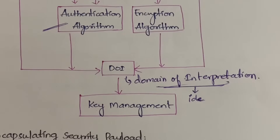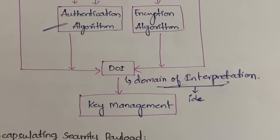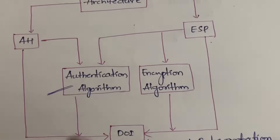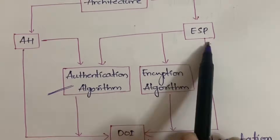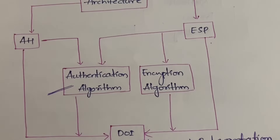So in this video, what we have learned: what is IP security and why we need it — in order to protect our communication happening over the internet. We also covered the applications, where we use it, and the architecture — which is a combination of two protocols, Authentication Header and Encapsulating Security Payload. We will be discussing about them in the next coming video.